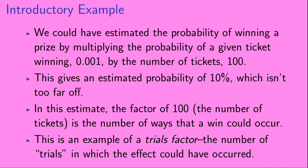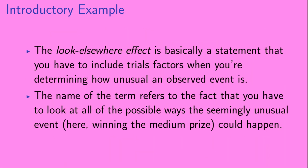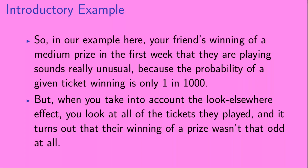This is an example of a trials factor — the number of trials in which the effect could have occurred. The look elsewhere effect is basically a statement that you have to include trials factors when determining how unusual an observed event is. The name refers to the fact that you have to look at all of the possible ways the seemingly unusual event — here, winning the medium prize — could happen. In our example, your friend's winning of a medium prize in the first week sounds really unusual because the probability of a given ticket winning is only one in a thousand. But when you take into account the look elsewhere effect and look at all of the tickets they played, it turns out that their winning of a prize wasn't that odd at all.